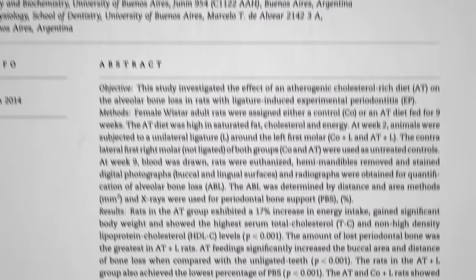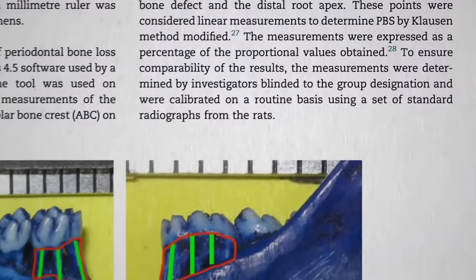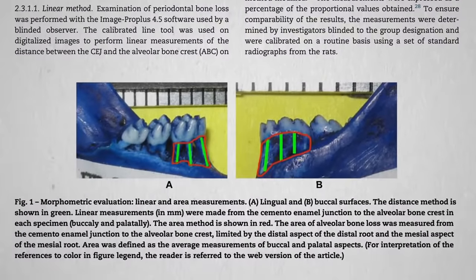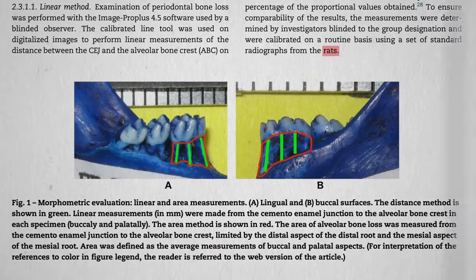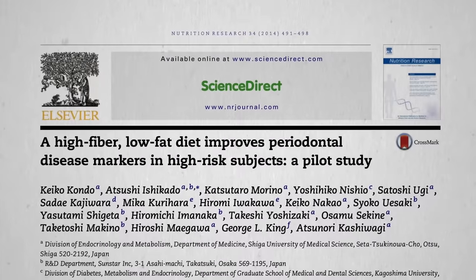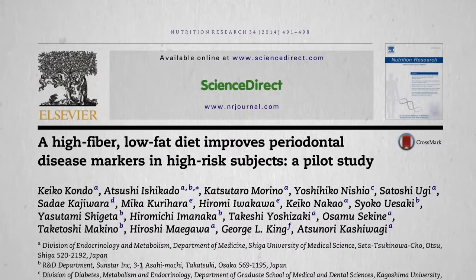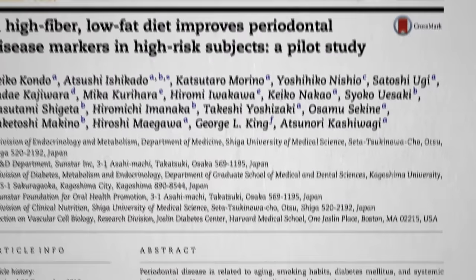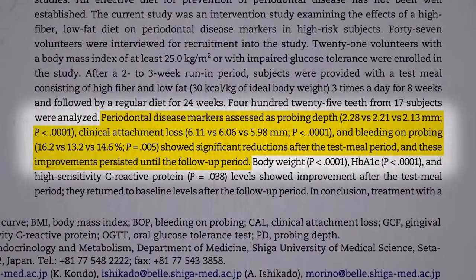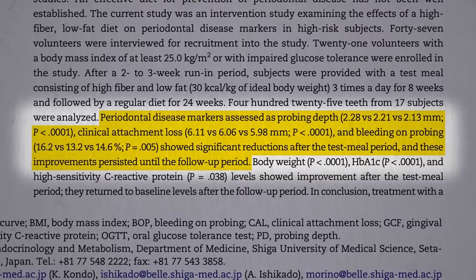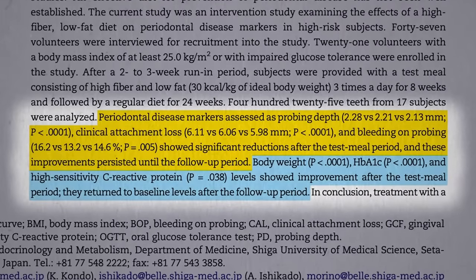Bone loss was indeed magnified by a diet high in saturated fat and cholesterol — though if you're thinking that's a weird-looking jaw, that's because it was a study done on rats. A high-fiber, low-fat diet improves periodontal disease markers in terms of probing depth, clinical attachment loss, and bleeding on probing — all the standard measures. And of course, eating a healthier diet improved body weight, blood sugar control, and systemic inflammation as well.